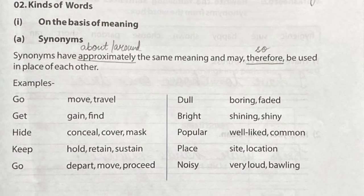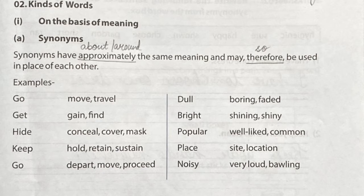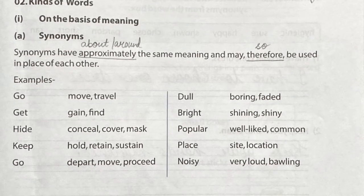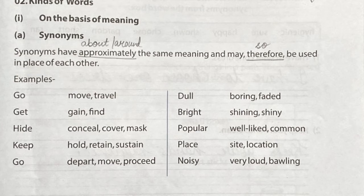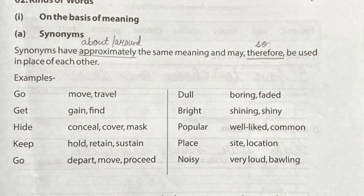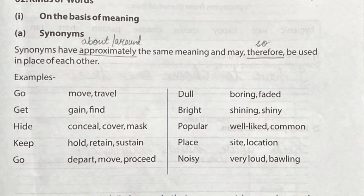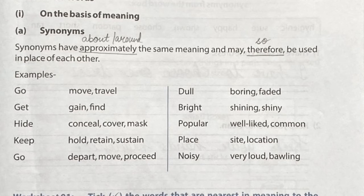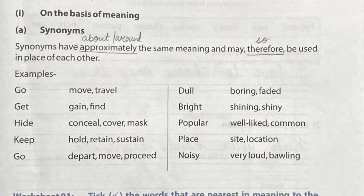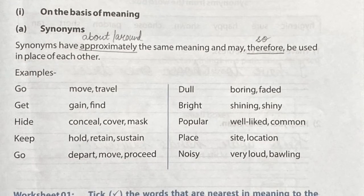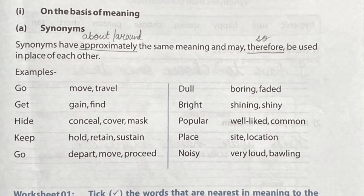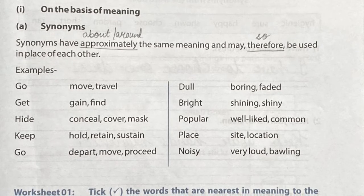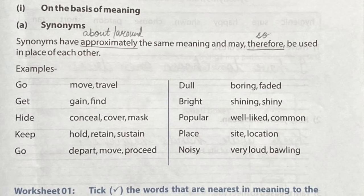Before starting synonyms, we have to understand what we mean by synonyms. Synonyms have approximately — approximately means about or around — the same meaning, and may therefore be used in place of each other. Synonyms are those words which have the same meaning, so because of that we can use them in place of each other.